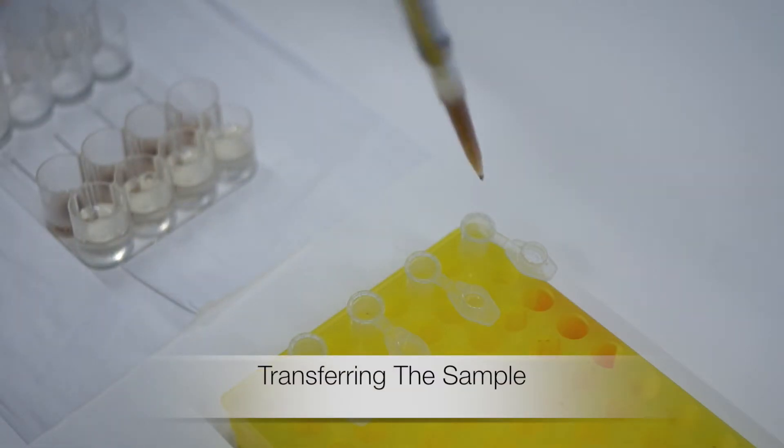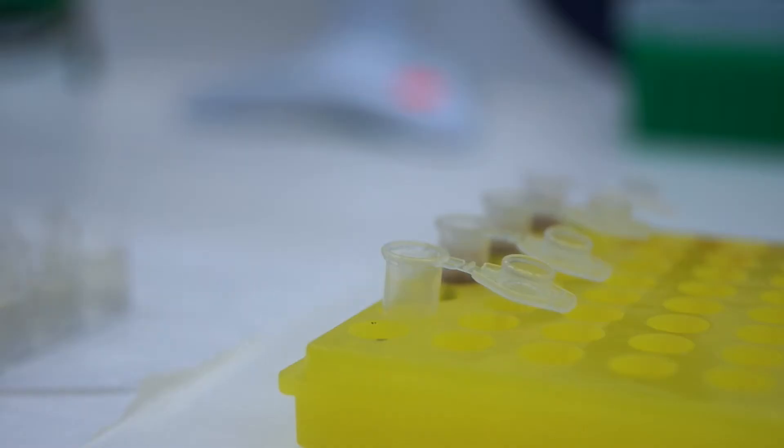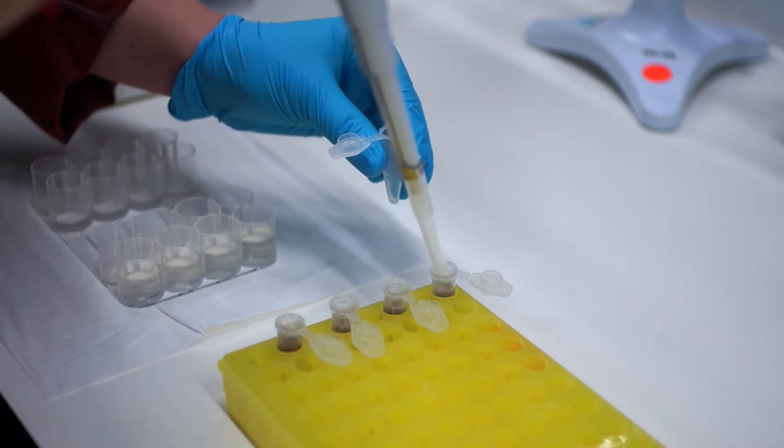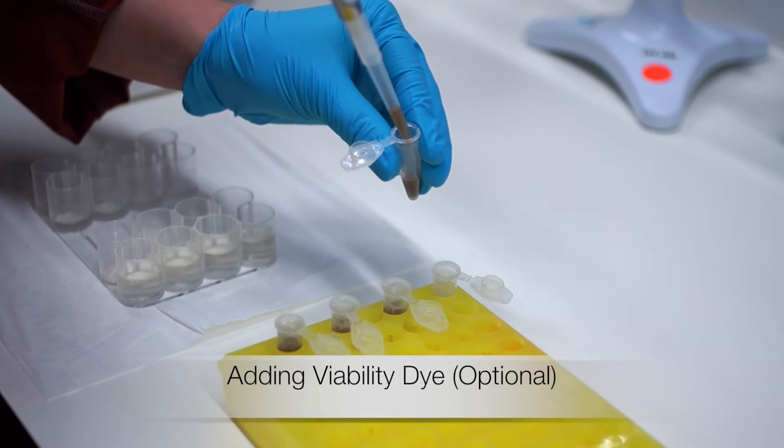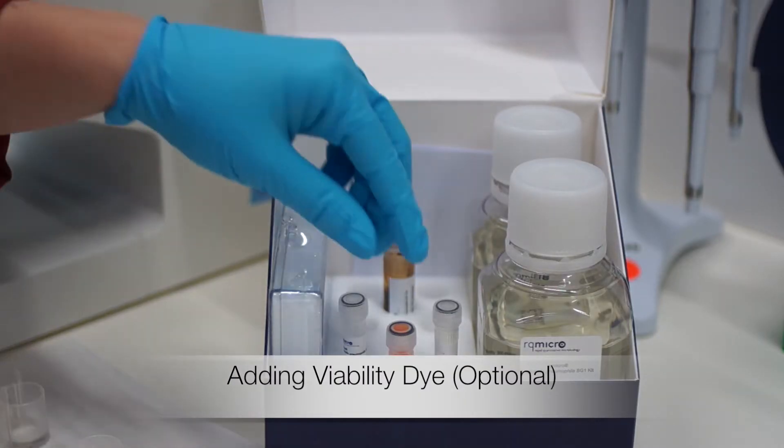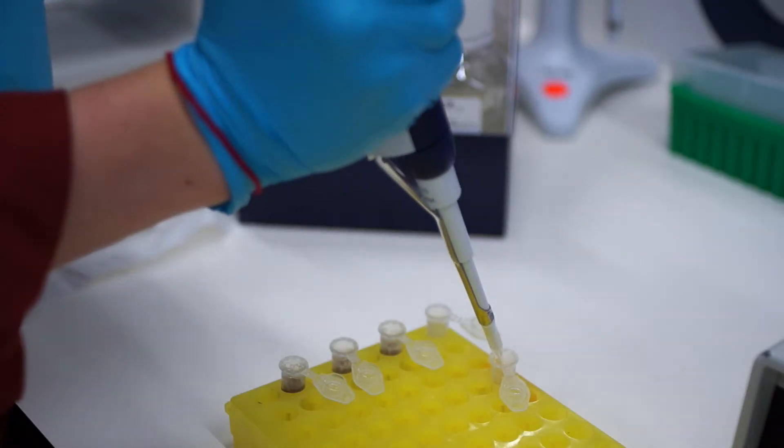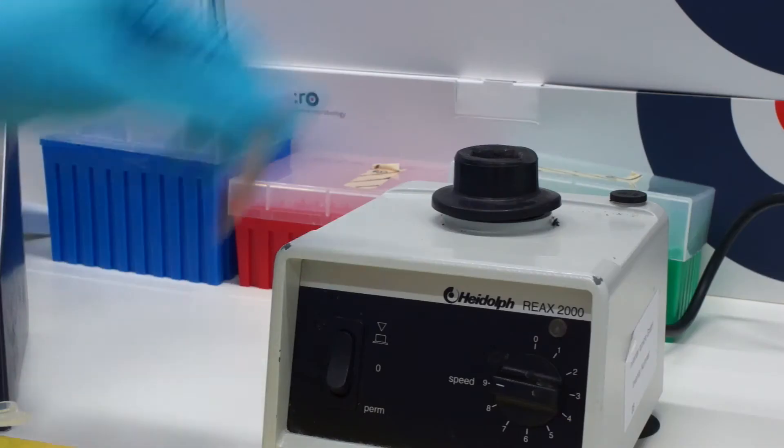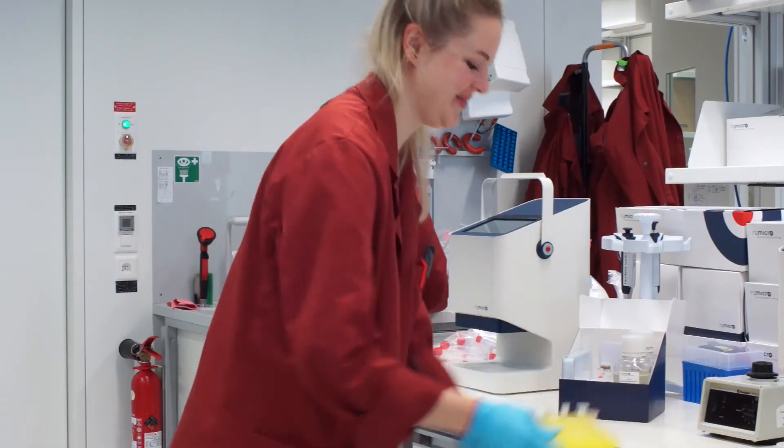In order to analyze the samples with the flow cytometer, I transfer my positive fraction into clean Eppendorf tubes. If I want to distinguish between live and dead Legionella cells, I transfer half of my sample, 500 microliters, into a fresh Eppendorf tube and add 5 microliters of the RQ Macro viability dye. I vortex and incubate for 10 minutes.